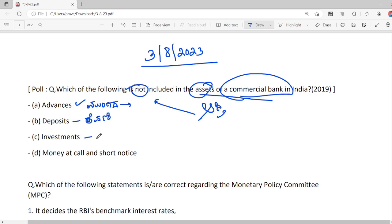Investment, investment. Money at call and short notice. Bank profit comes from these, but advances is a bank liability.